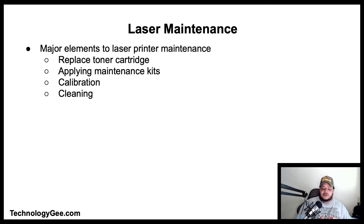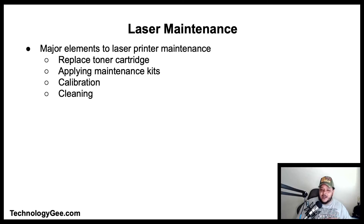You should also calibrate the laser printer if print quality starts to decline. The calibration process adjusts density settings to compensate for environmental differences or aging print cartridges; some laser printers perform automatic calibration, but you can also force calibration on an as-needed basis. Finally, clean the printer using a vacuum cleaner designed for laser printer toner, and follow the cleaning instructions outlined by the manufacturer for the various parts and components.